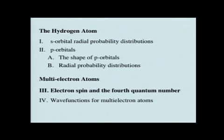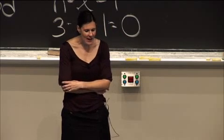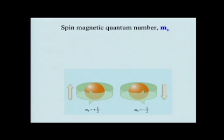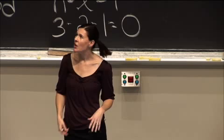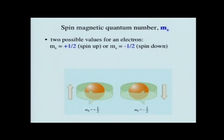We are now ready to move on to multi-electron atoms. When we solve the relativistic version of the Schrödinger equation and we're discussing more than one electron, we actually have a fourth quantum number that falls out — this is called the electron spin quantum number — and I promise this is the last quantum number we'll be introducing. This spin magnetic quantum number is abbreviated as m sub s, to differentiate from m sub l.